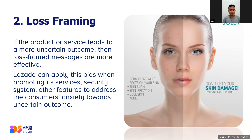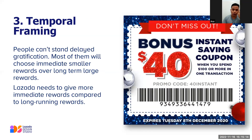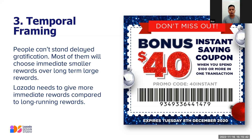Next we have temporal framing. People cannot stand delayed gratification — most will choose immediate smaller rewards compared to long-term rewards. So instead of making a big annual reward with the winner decided at the end of the year, we need to give more immediate rewards compared to long-running rewards. These are more likable than the long ones.